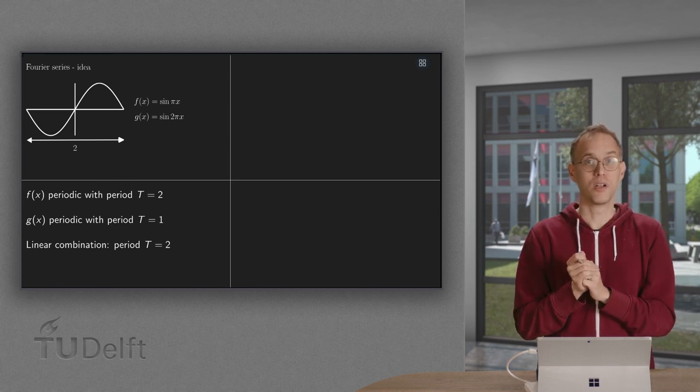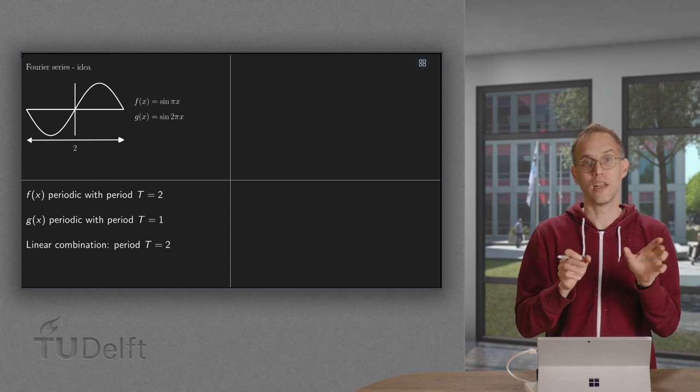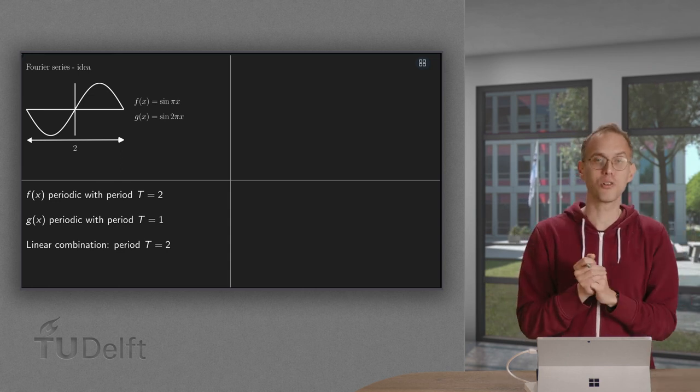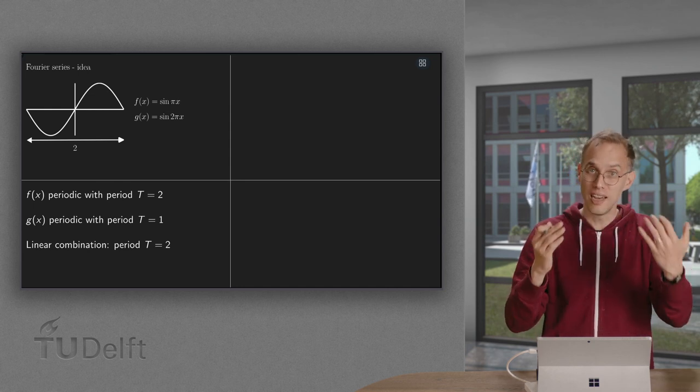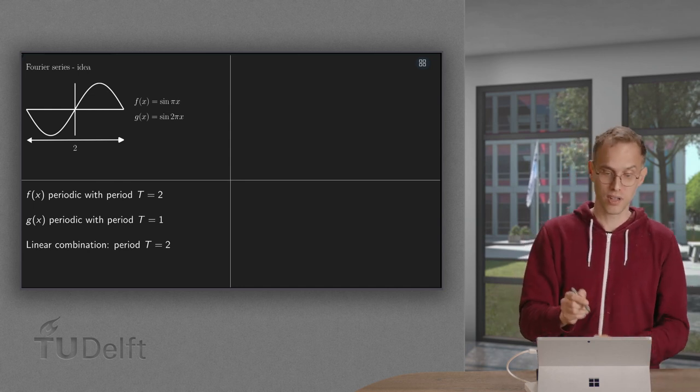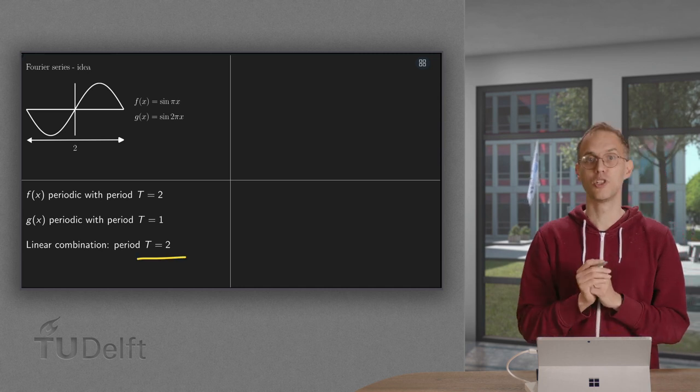After t equals 2, it has just gone twice, but it's also the same again if you go 2 further. So the linear combination of them will also be periodic with a period of t equals 2.